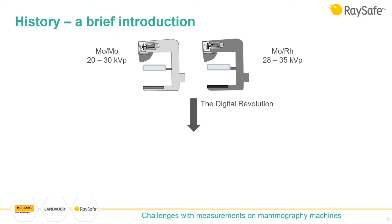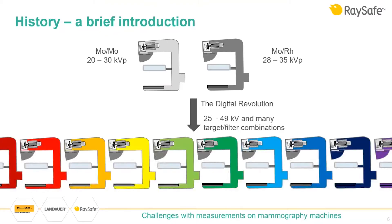A molybdenum filter was used at the lower end of the spectrum, and rhodium filter at the higher end. With the digital revolution came a lot of new challenges in mammography — new target-filter combinations, new acquisition modes, and a lot of behaviors that were never seen before. Measuring all these variations can be a huge challenge.